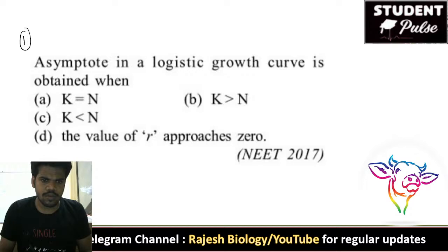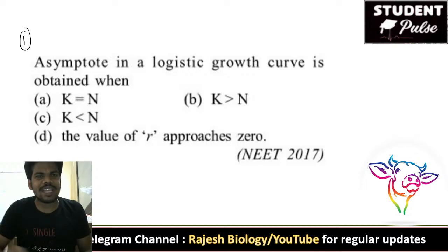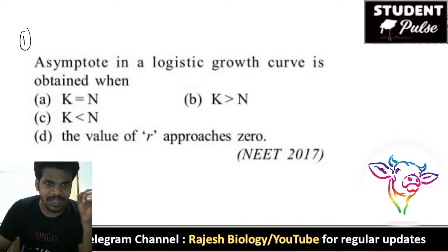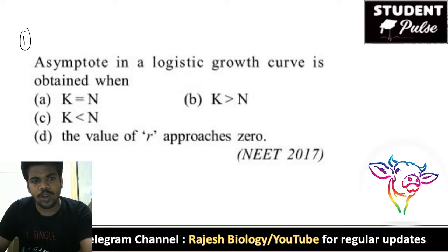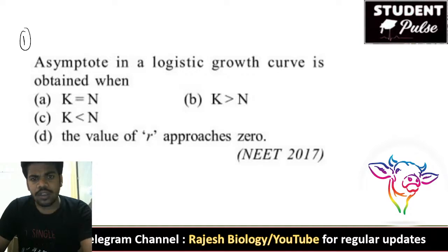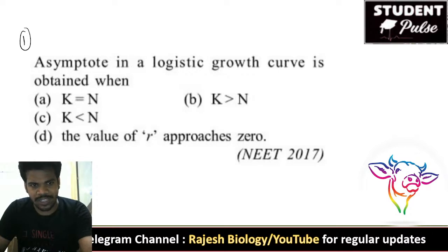This is the first question in our today's quiz. Asymptote in a logistic growth curve is obtained when: when K is equal to N, when K is greater than N, when K is less than N, or when the value of r approaches 0. When do we get the asymptote in a logistic growth curve — that is the question.